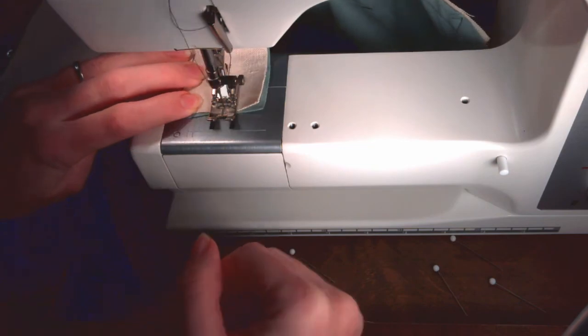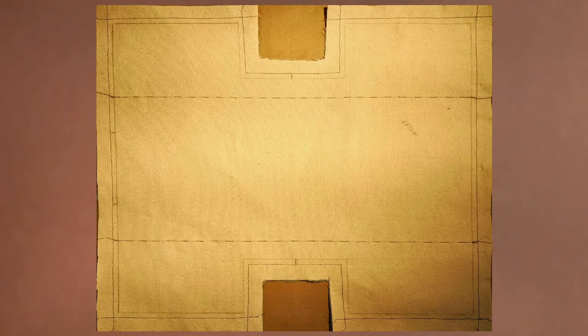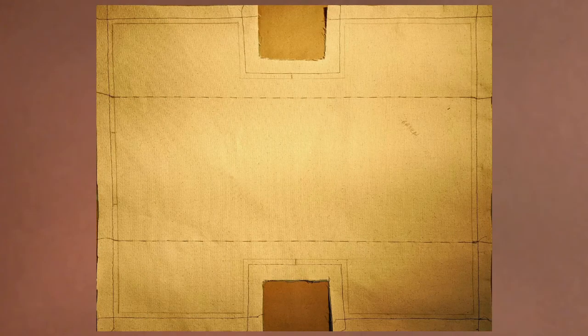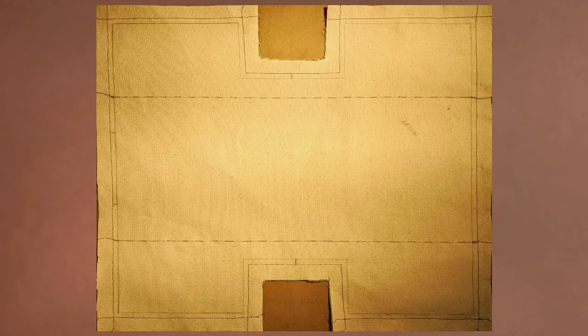When you reach the edge of the fabric, check that the needle is up, lift the presser foot, and pull the work towards the back. Cut the threads. Continue until all of the edges are sewn. Remove the pins and press the layers flat.